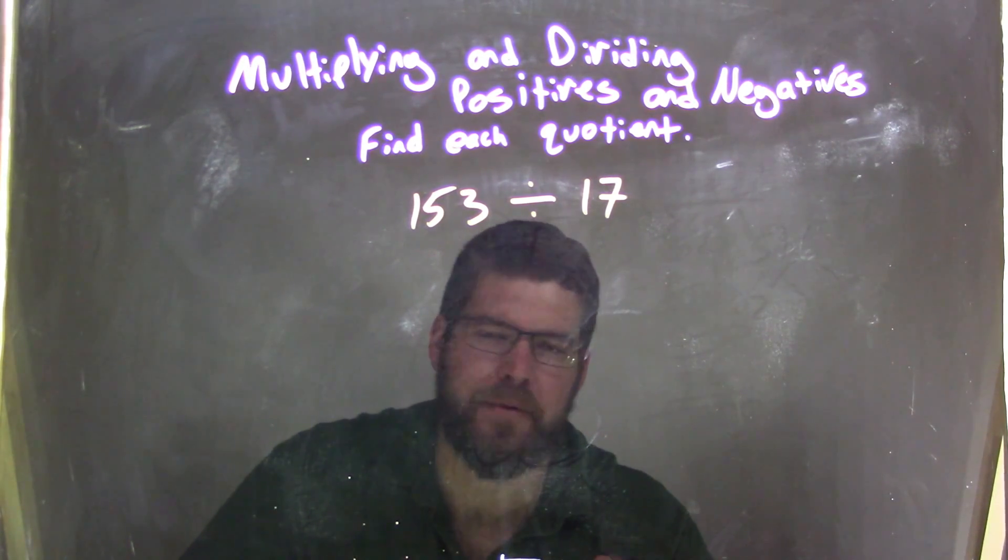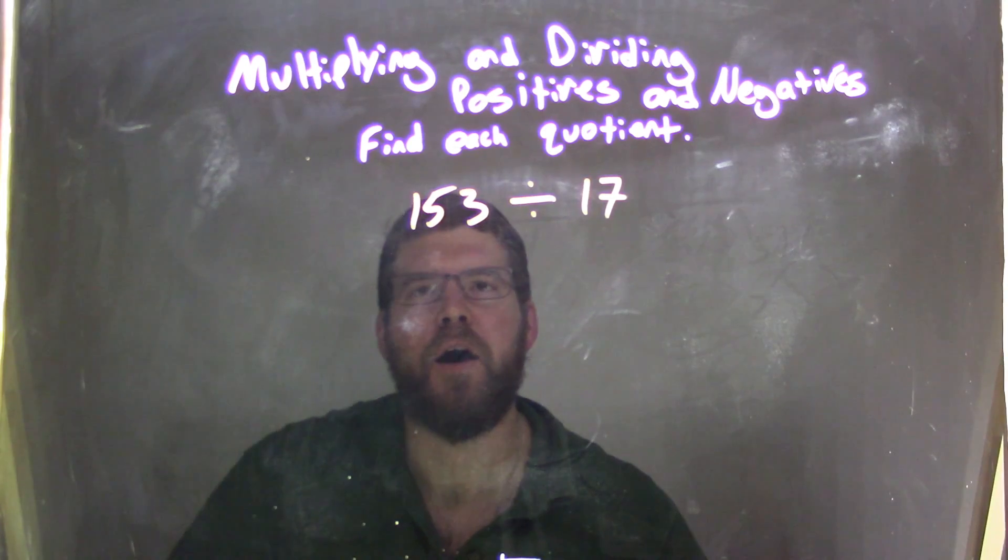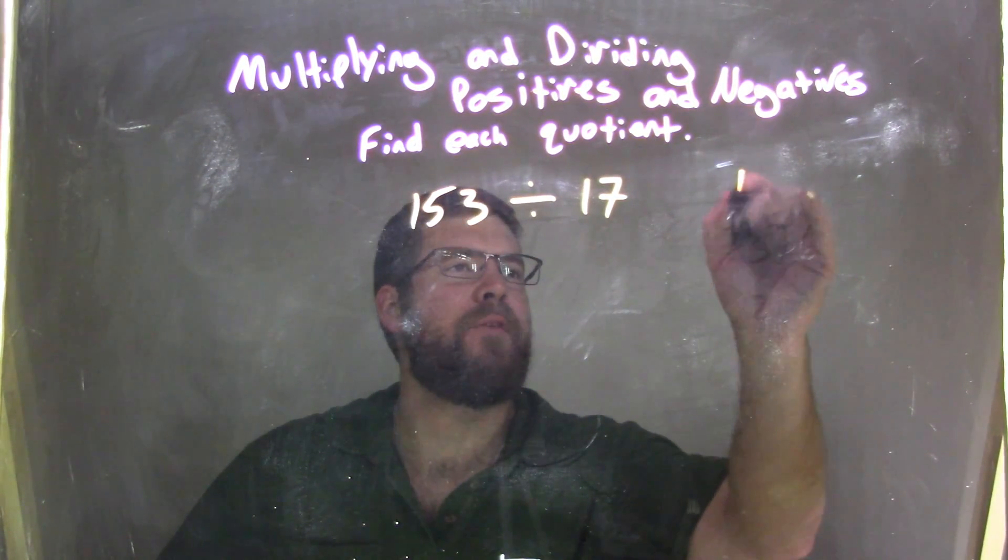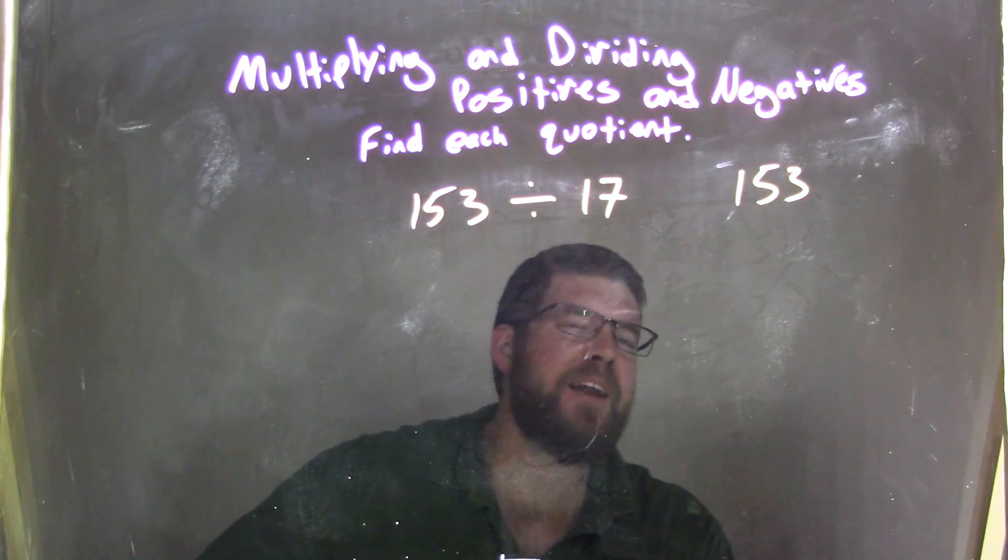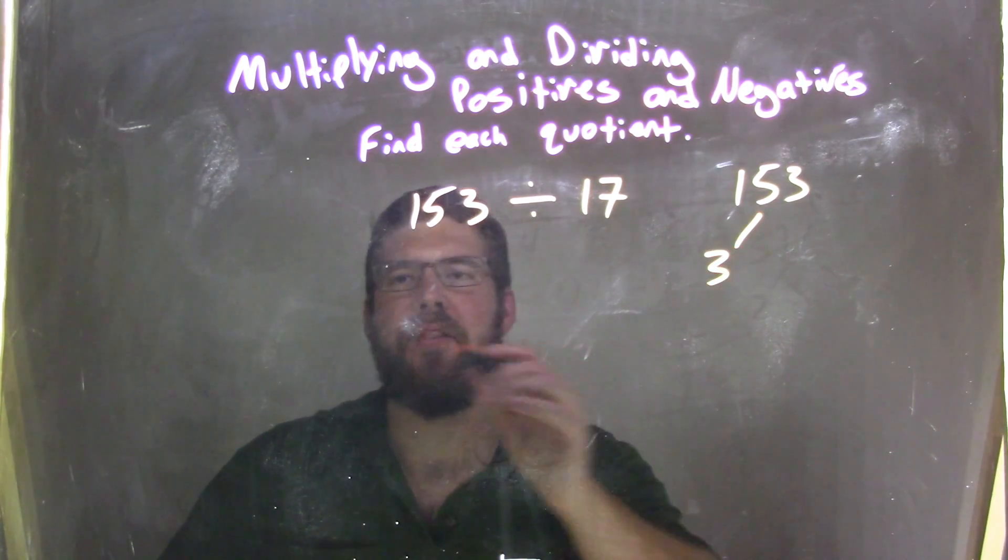And so 153, I know I can break down. We think about 153. I'm pretty sure I can break it down, right? And we want to think, okay, what goes into this number? Well, I think 3 does, so I'm going to try that. Okay, I could be wrong. So 3 goes into 153.